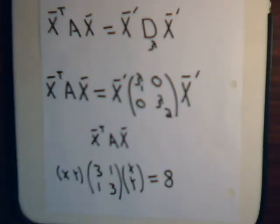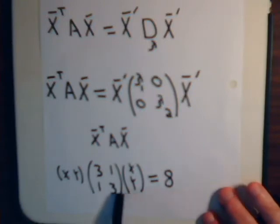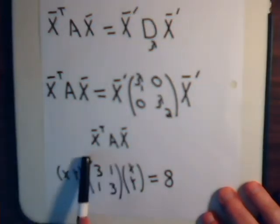This is part two of our video where we are dealing with rotation of a coordinate axis system. Specifically, we have this equation, which is the general quadratic form. The general quadratic form, of course, is like this.